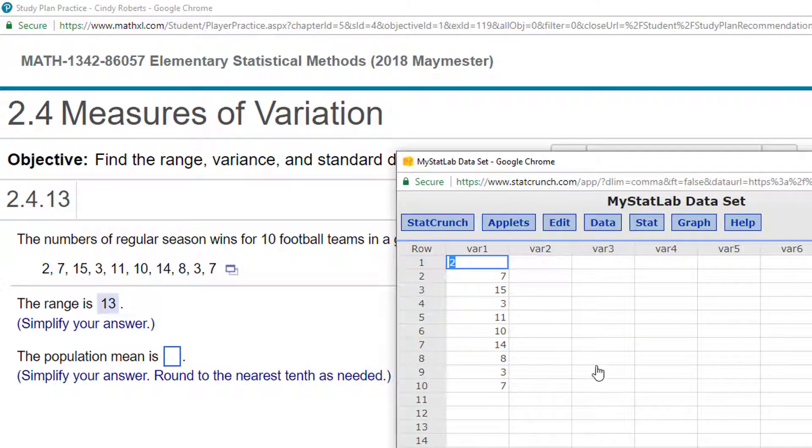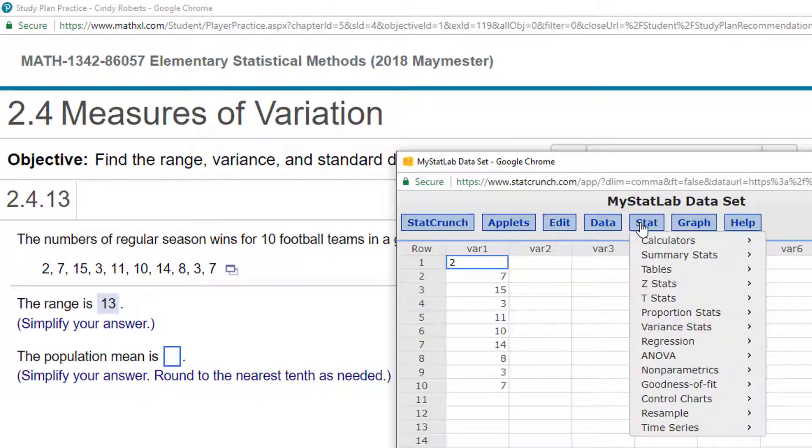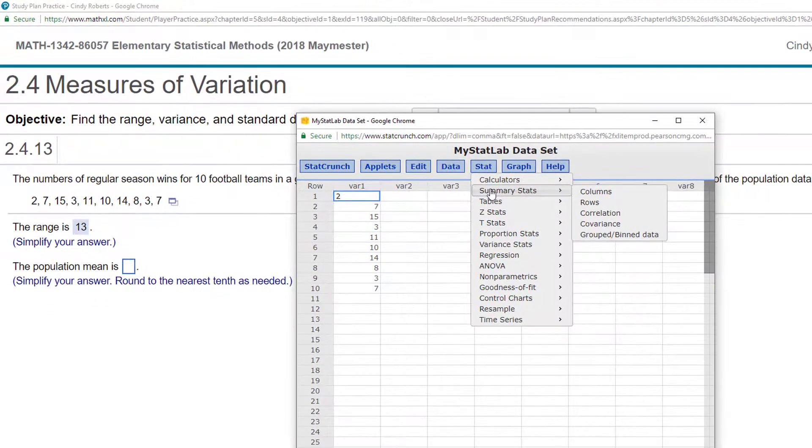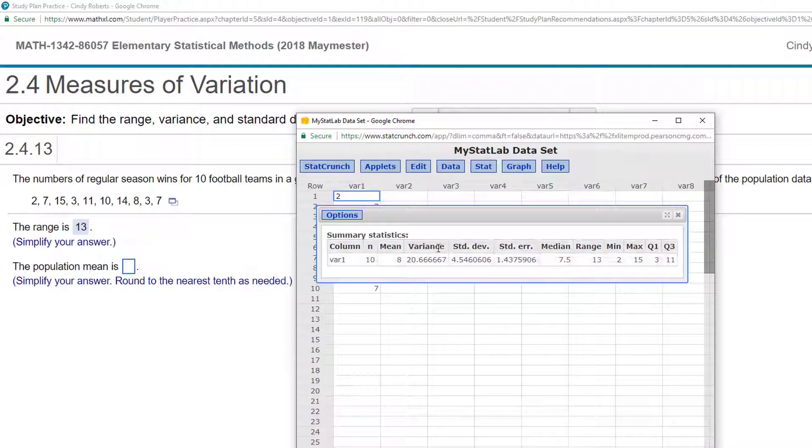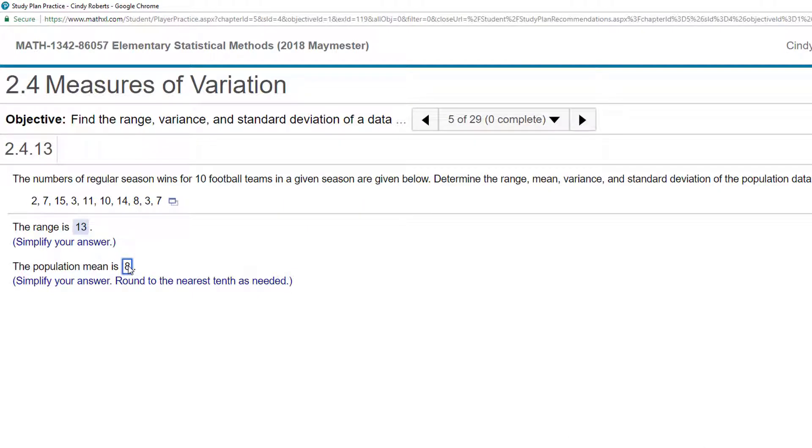And so it opens, and then I can go up here to Stat, Summary Stats, and my data is in a column, so column. Select variable 1, and then I get all this stuff that's highlighted here, so I hit Compute, and I can see the mean is 8. So I'll put that in, and well done!